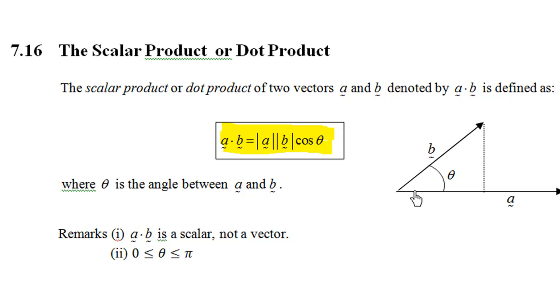And here is the illustration. I have vector a. I have vector b and the angle between a and b is denoted by theta. So, the dot product or the scalar product of a and b is the magnitude of a times the magnitude of b cosine of the angle between a and b.